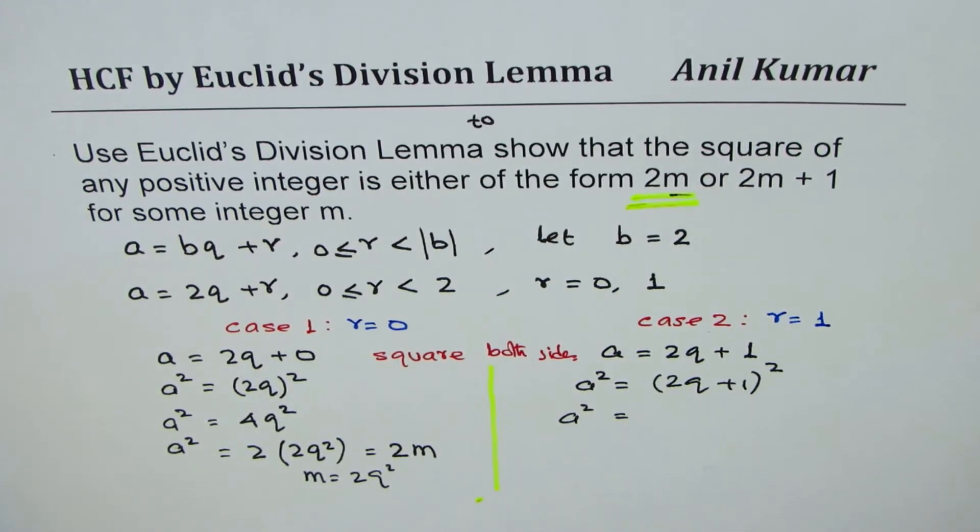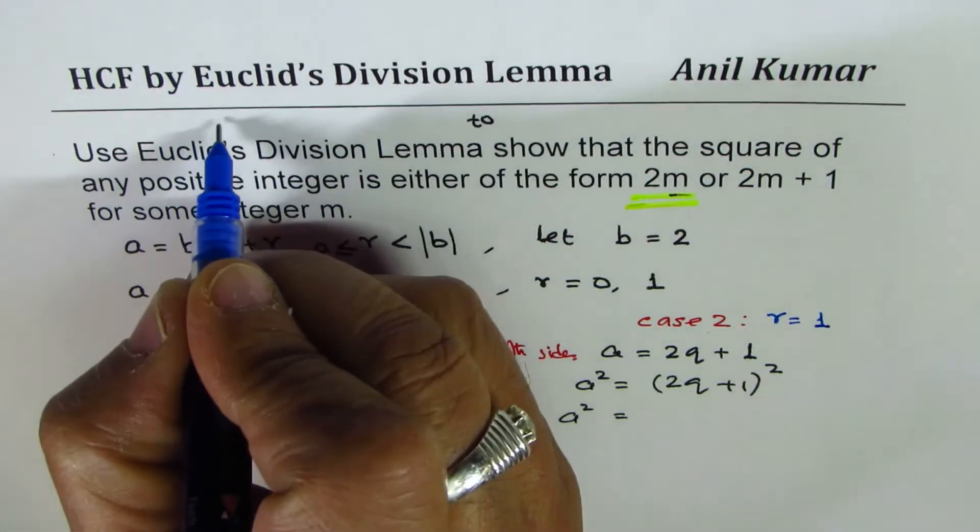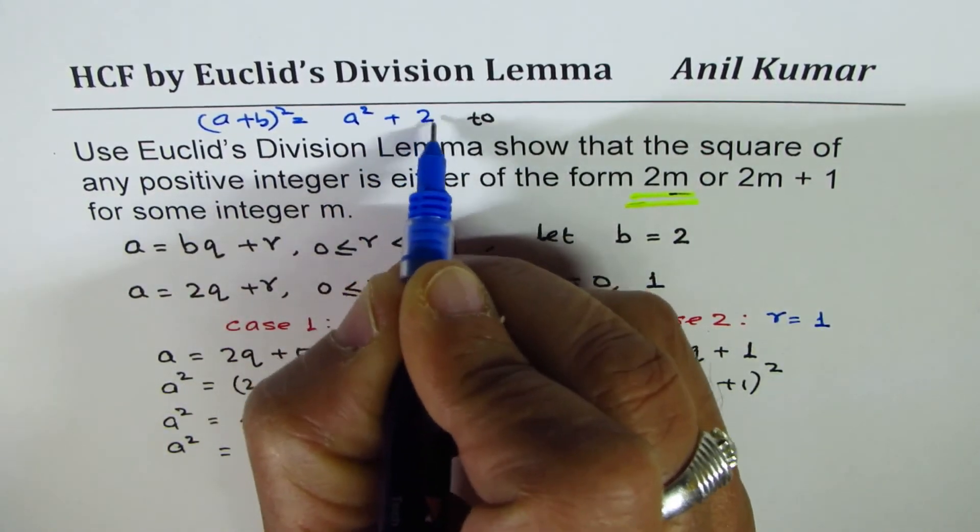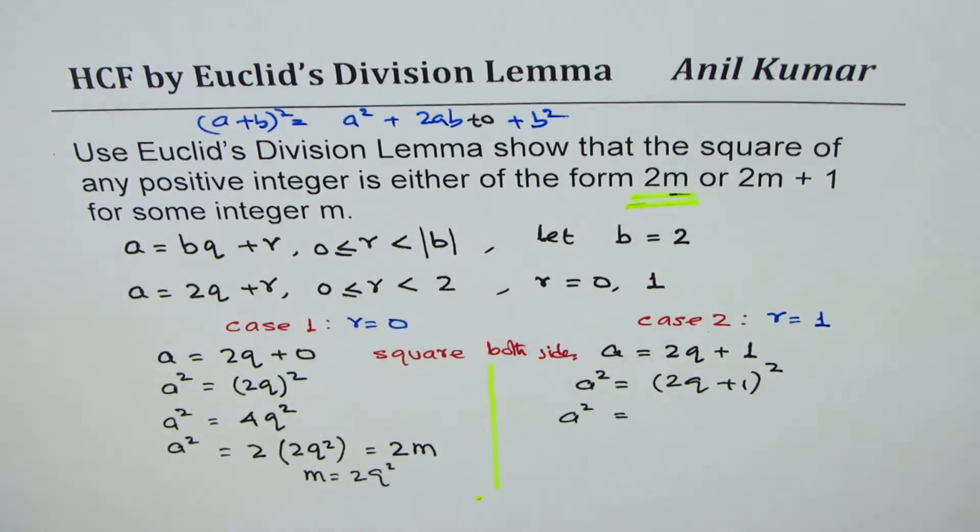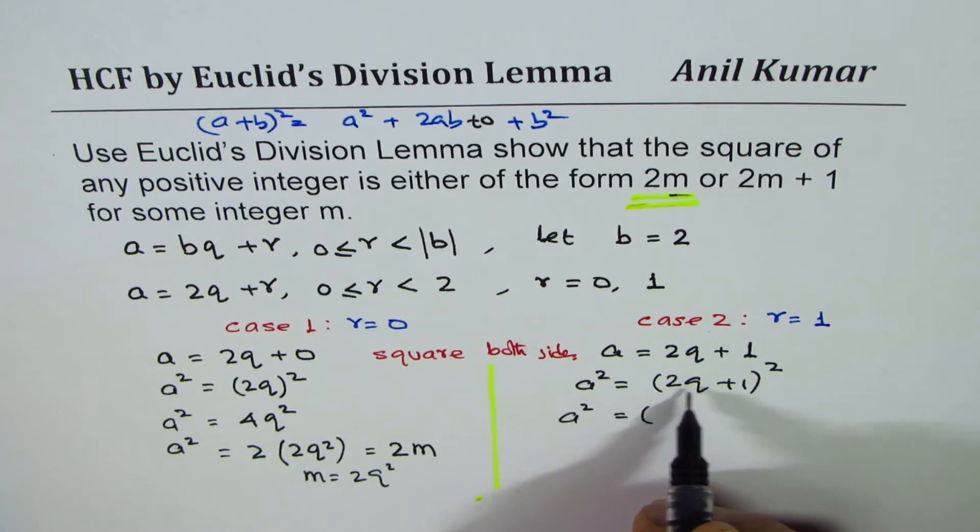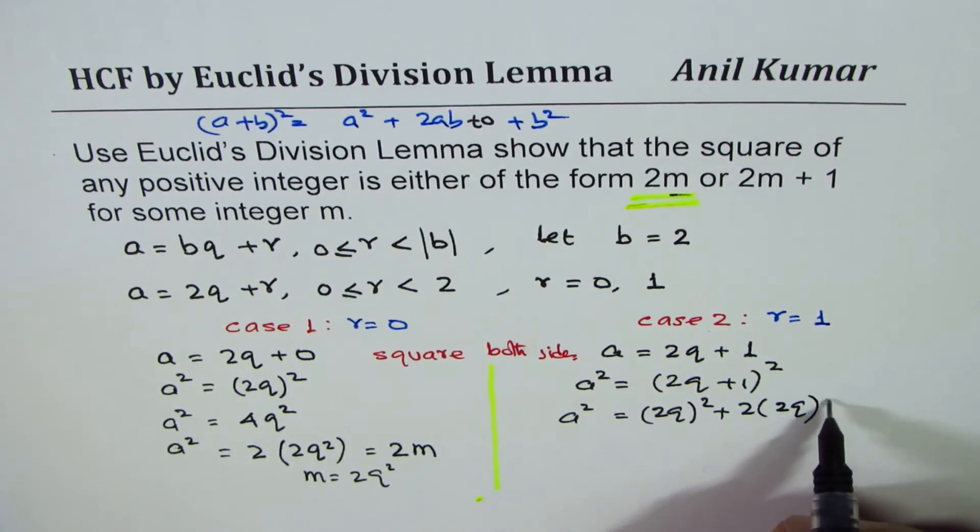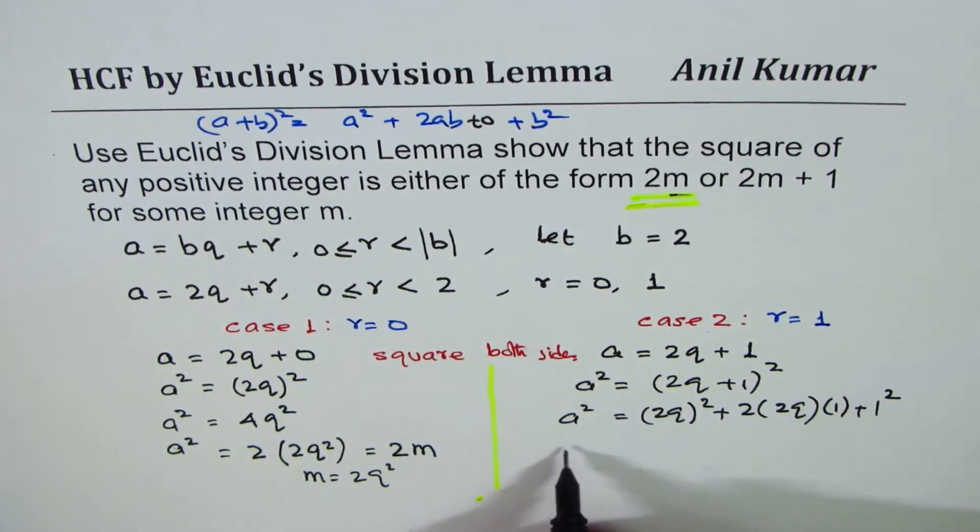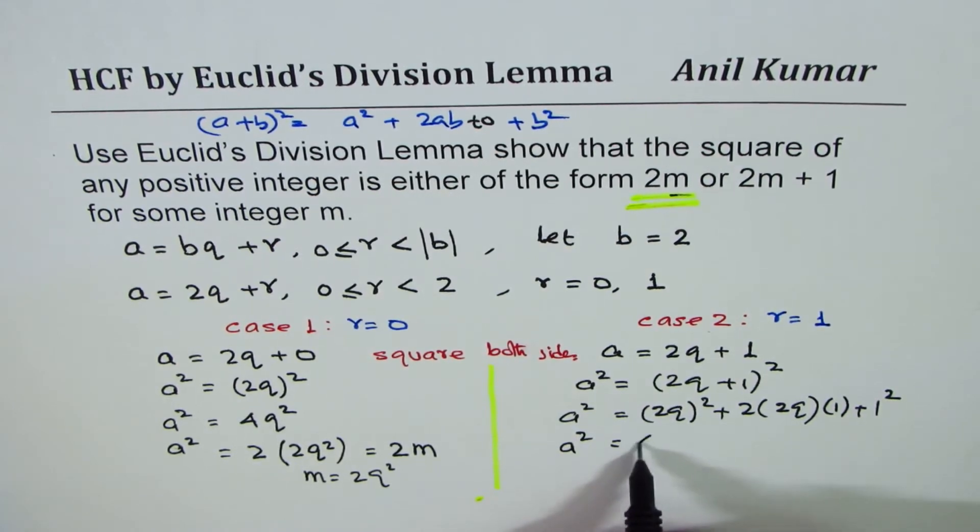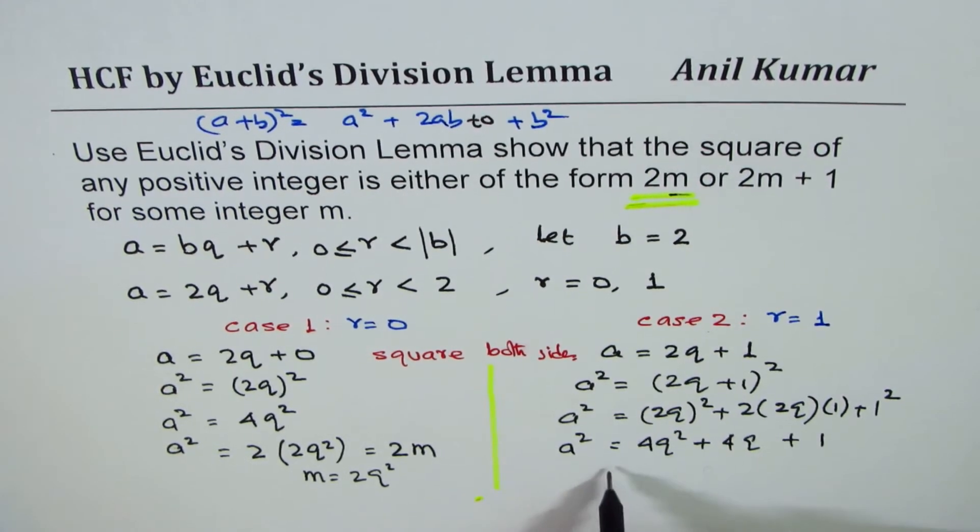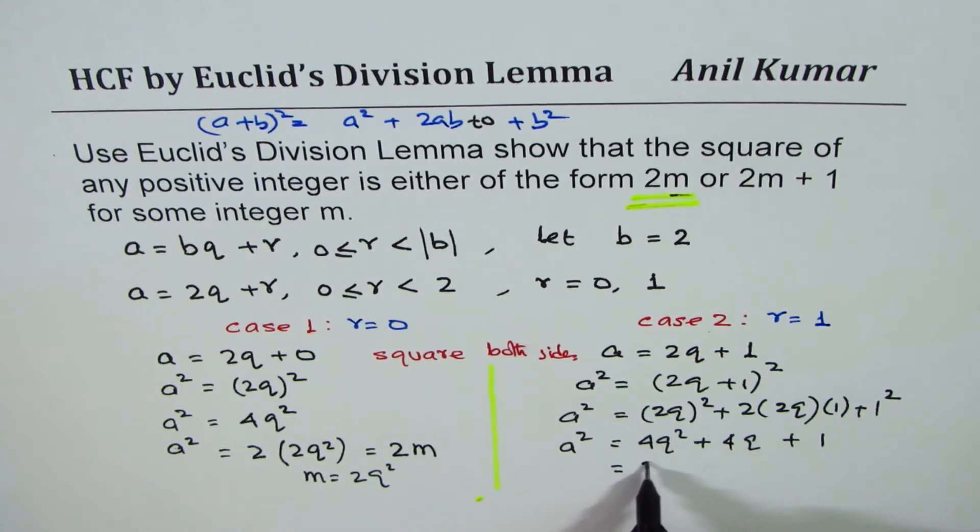If I have (a + b)², it gives us a² + 2ab + b². So we get a² where a is 2q: (2q)² + 2(2q)(1) + 1². We can write this as a² = 4q² + 4q + 1. Now I could take 2 common.